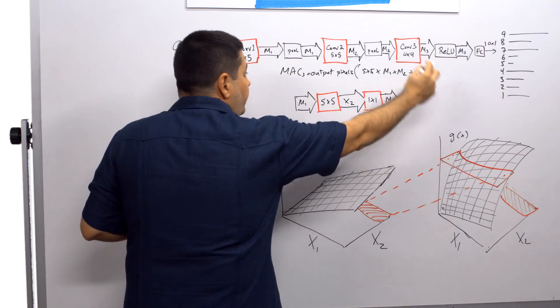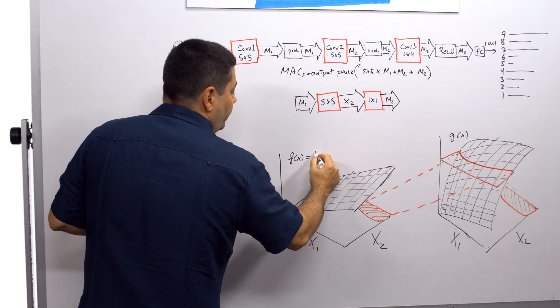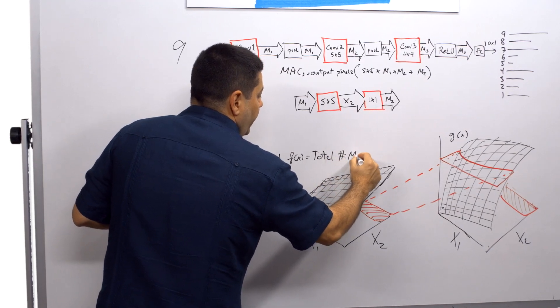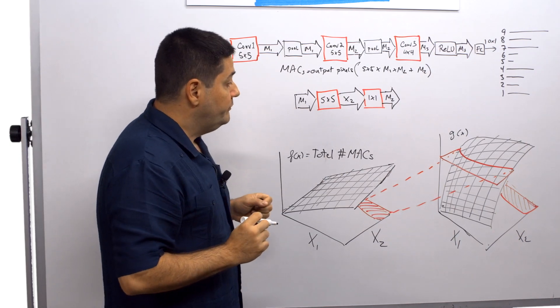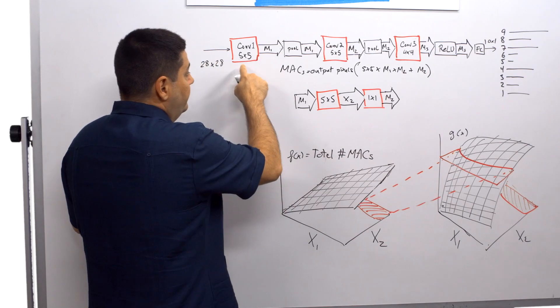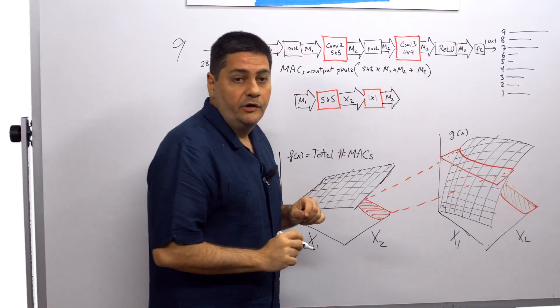So the first thing we do is create a function f of x, which is equal to the total number of multiply accumulates. And the second thing we do, and this is f of x where x is a vector x1, x2, and x3 for each of these blocks.